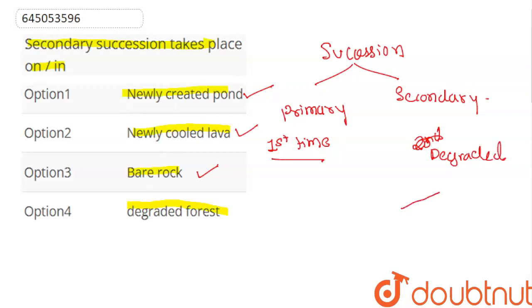First, succession finally reaches final equilibrium by the growth of trees. Now, trees can be removed by deforestation and the forest becomes degraded. And now, secondary succession starts for the second time in the forest.